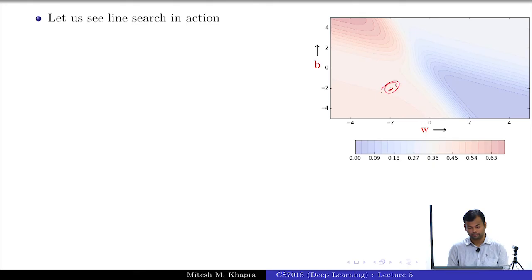Now let us see what happens if I run... So now I will start running the line search based gradient descent. What do you expect now? So it will just move very fast.